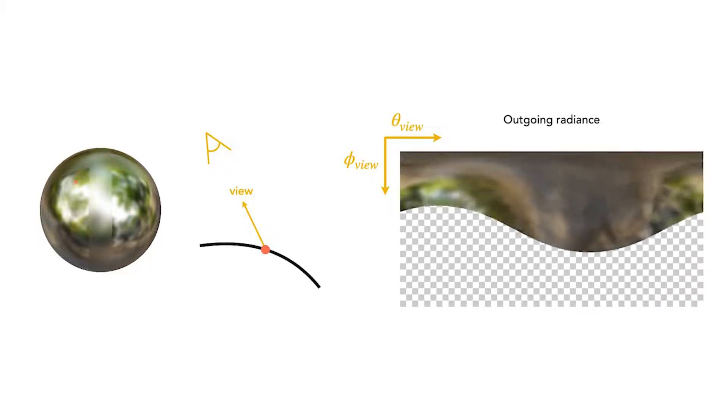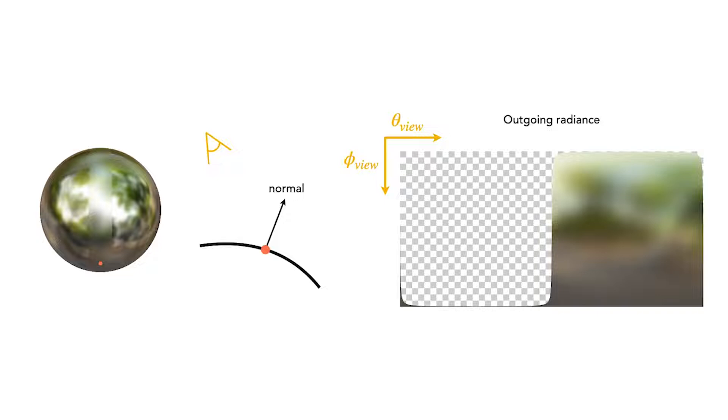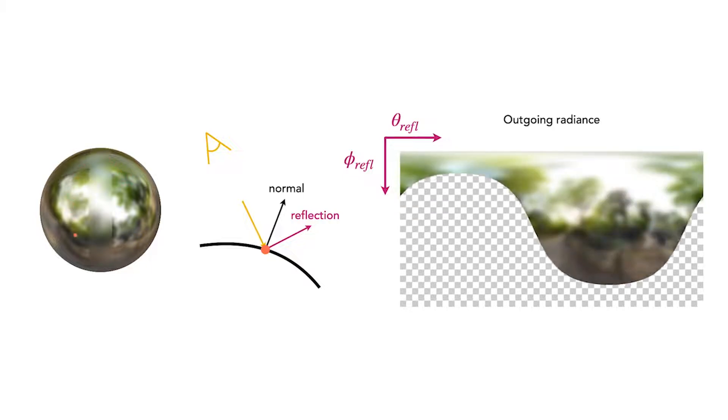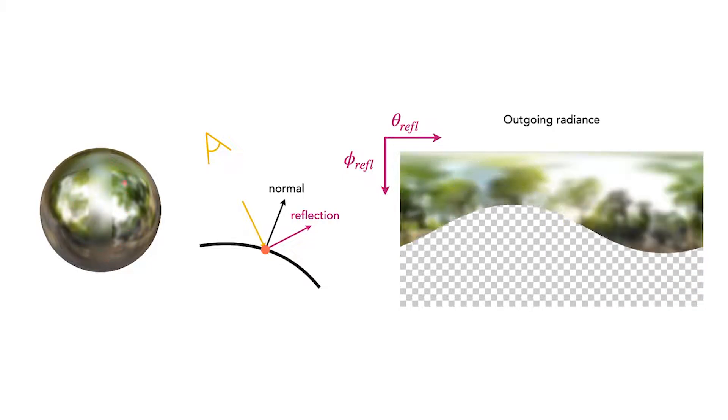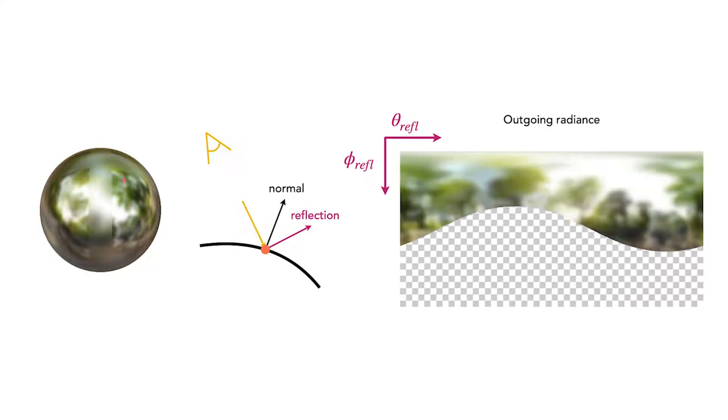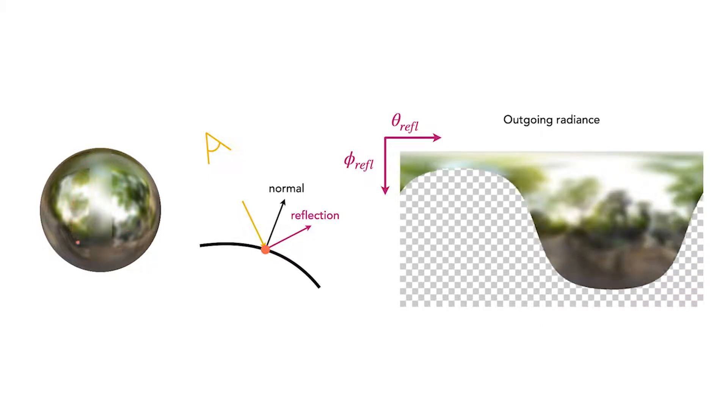One of our key contributions is to use the normal vector at each 3D point and re-parameterize outgoing radiance as a function of the reflection of the view direction about the normal. This re-parameterization makes the underlying function simpler and easier for the network to interpolate. Now, it only changes when the orange point moves into the rougher regions of the ball, for which the underlying reflected radiance function is blurred.